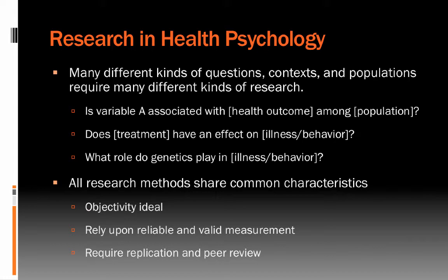Some questions might be, for example, whether a variable is associated with some health outcome among a certain population. We may be interested in whether some sort of treatment has an effect on some illness, behavior, or other kind of outcome. Or we might be interested in individual difference variables — things like what role genetics or personality play in illness and behavior. Each of these might require a different type of design.